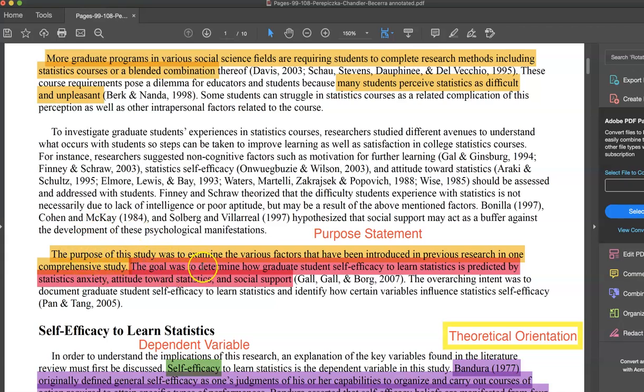So in this study, the purpose of the study is to determine how graduate student self-efficacy to learn statistics is predicted by statistics anxiety, attitude towards statistics, and social support.